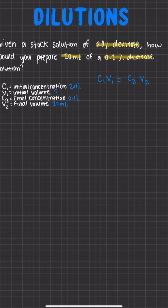So before we can do anything, we need to rewrite our equation, and to do this, we're going to divide by V1, since that's what we're solving for. So the new equation is going to be V1 is equal to C2 times V2 over C1.